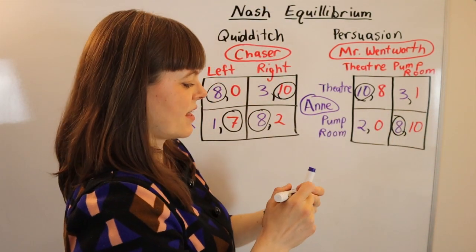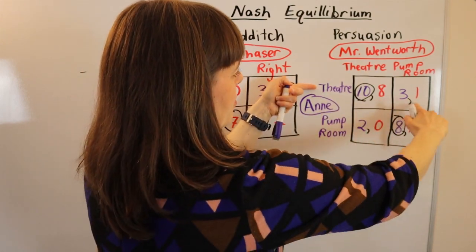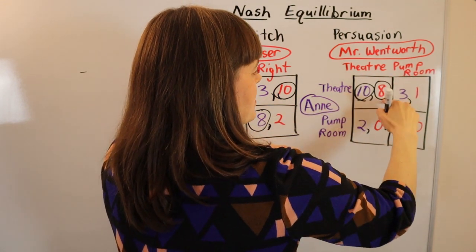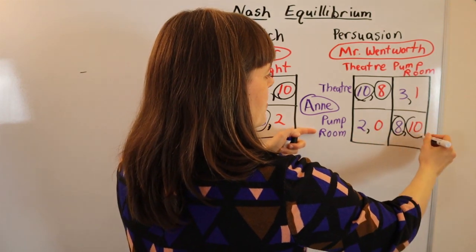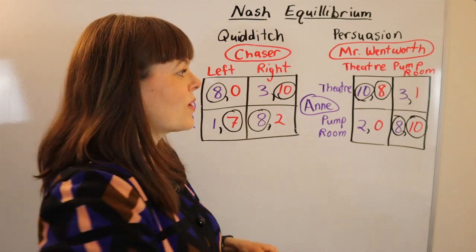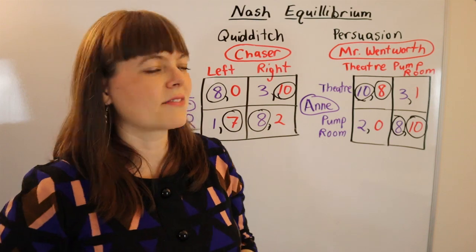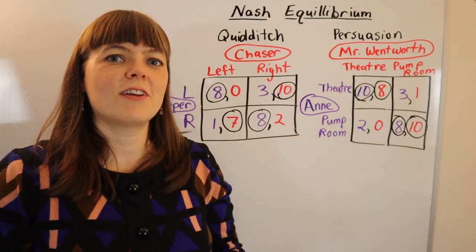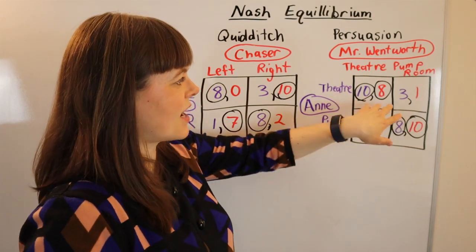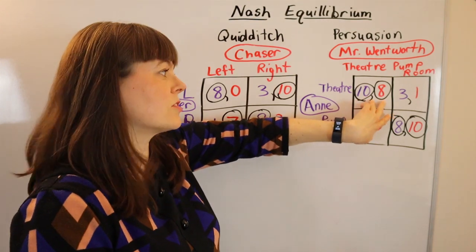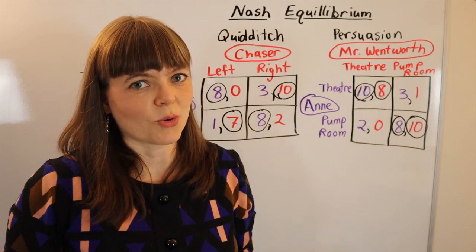Then we switch to Mr. Wentworth's perspective: if Anne goes to the theater, he prefers to have gone to the theater — he likes the eight better than the one. And if Anne goes to the pump room, he prefers to have gone to the pump room. Therefore, we actually have two Nash equilibria in this case. This is a game called the Battle of the Sexes. The key takeaway: anytime you have two circles in a box, both players can say — given what the other player chose, I'm really happy with the choice I made.